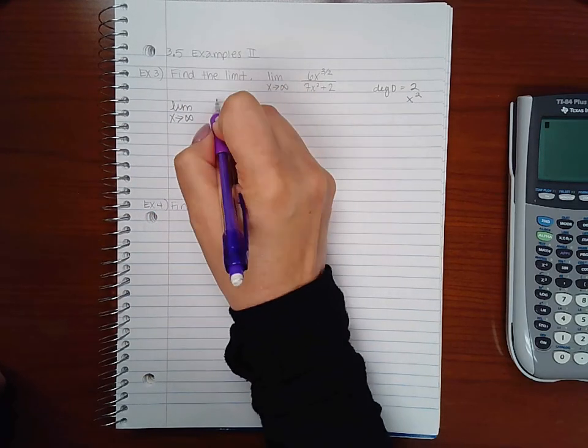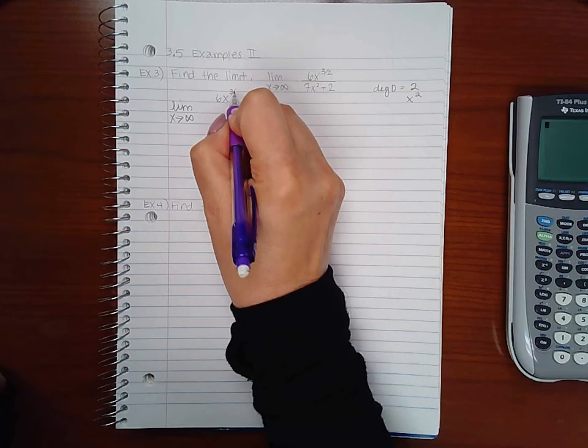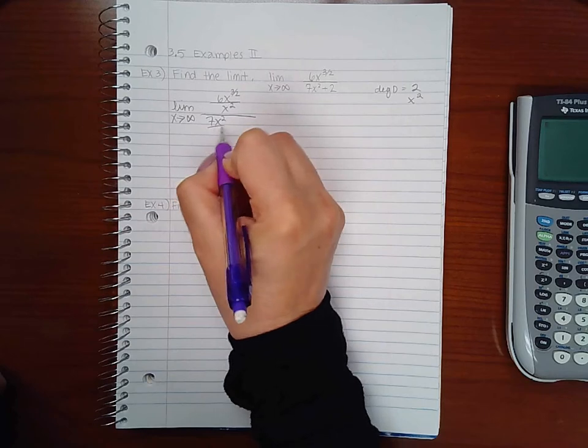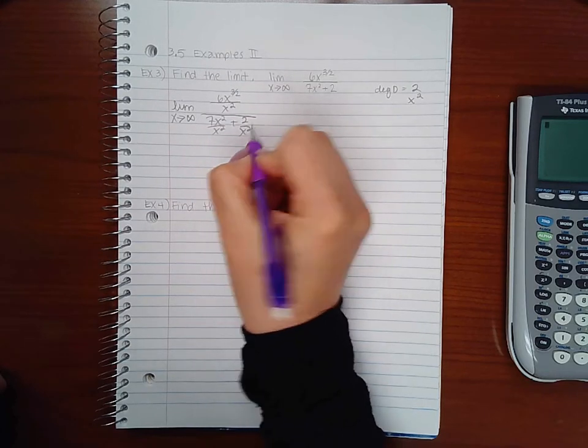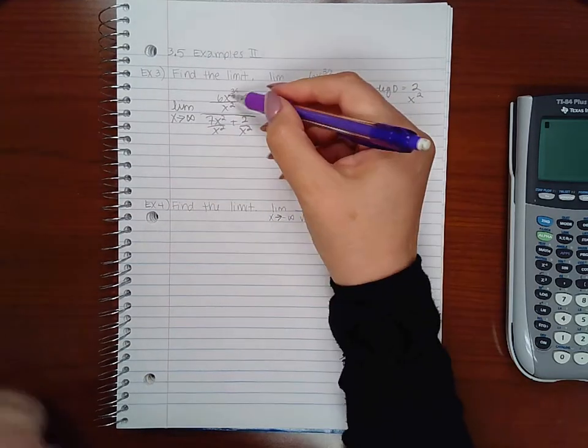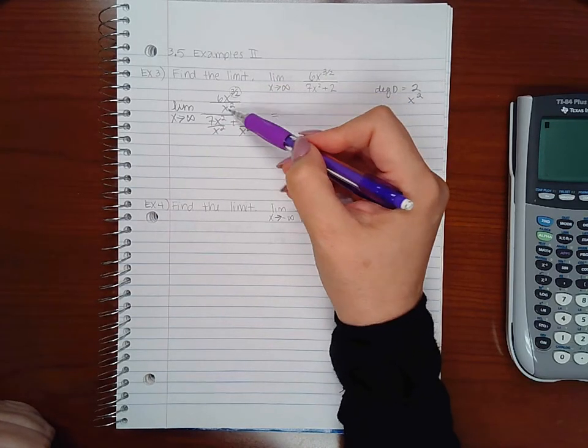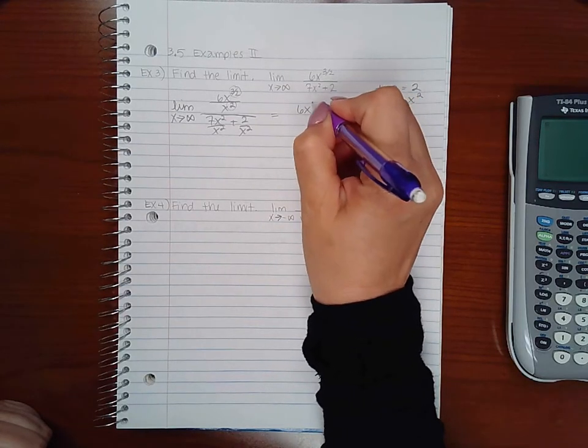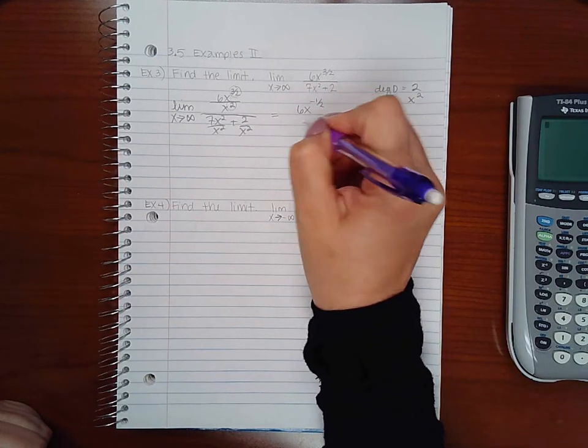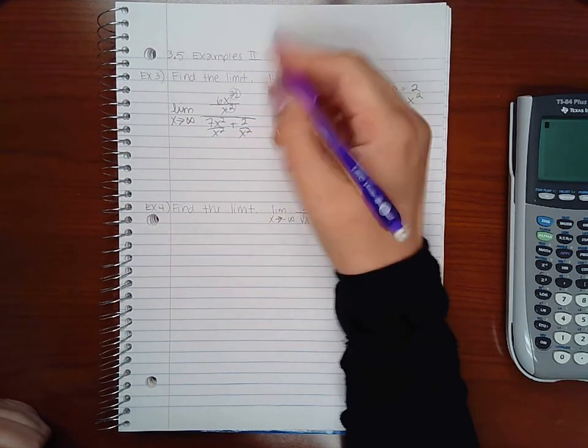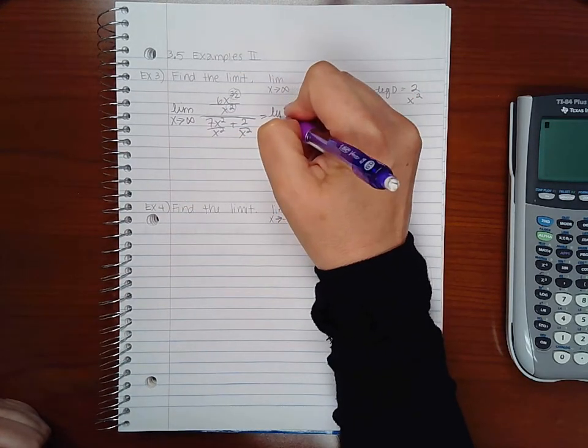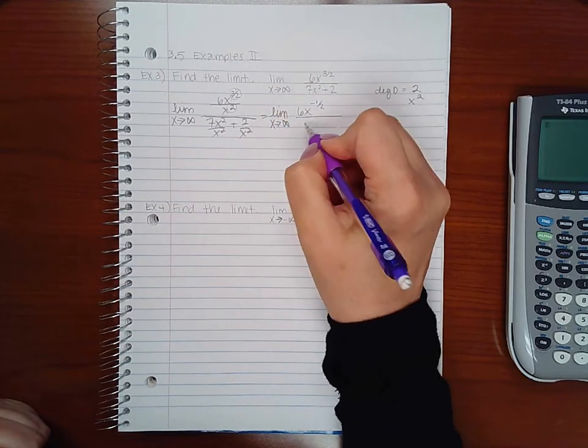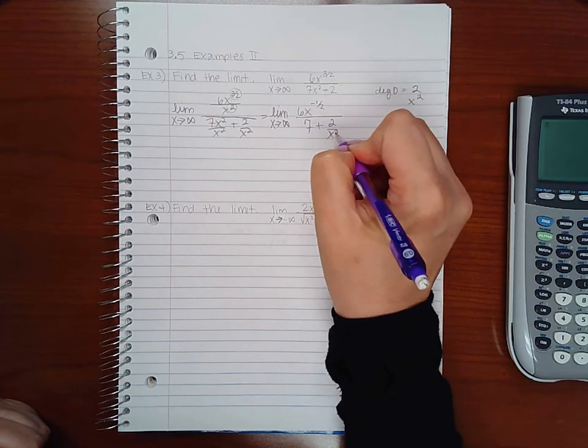So the limit becomes 6x to the 3 halves over x squared, over 7x squared over x squared plus 2 over x squared. Now when we reduce this, we have to take the top exponent minus the bottom exponent, which is going to give me 6x to the negative 1 half. And I need to keep my notation here.